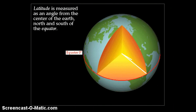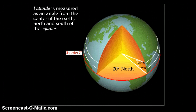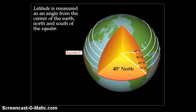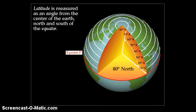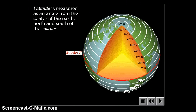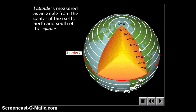Latitude is measured in angles from the center of the Earth. You may have heard people say 45 degrees north latitude. Degrees are normally used to measure angles, and in latitude they are also used to measure an angle. You're actually measuring the angle between the equator, the center of the Earth, and your point on the surface of the Earth — wherever it is. That's why latitudes and longitudes are reported in degrees.